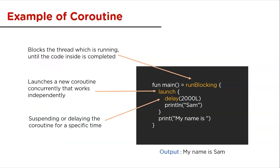In this example, runBlocking refers to the main thread — it is the scope of the coroutine. Launch will launch a new coroutine concurrently. Delay will suspend the coroutine for a selected time — here that time is 2 seconds (in milliseconds by default). The word 'Sam' will be printed after 'my name is' because of the 2-second delay.